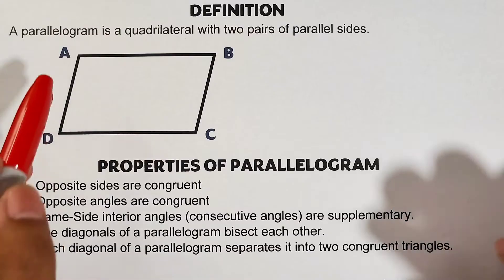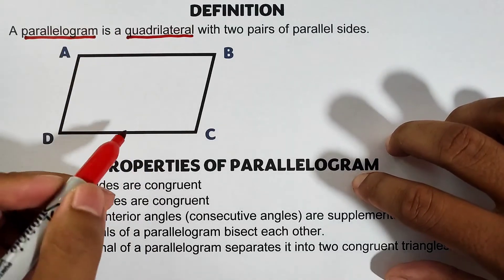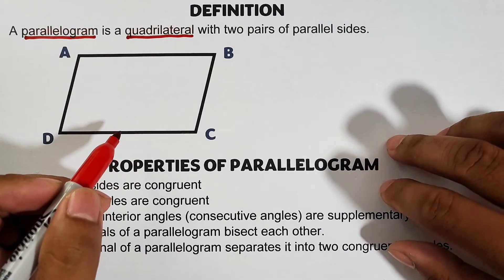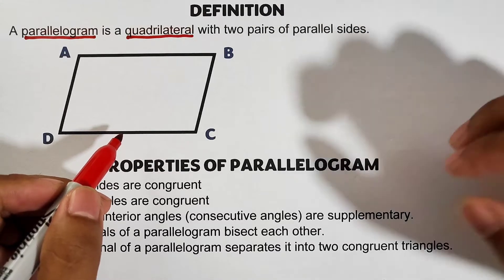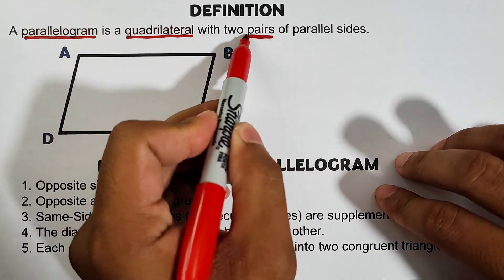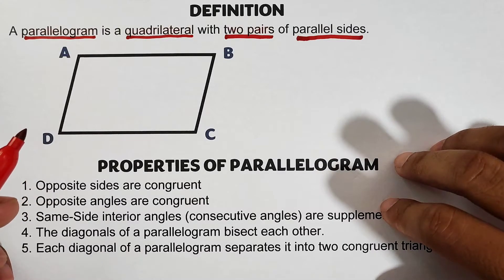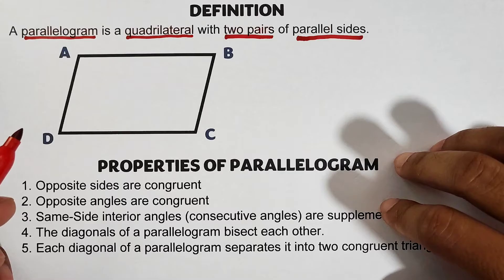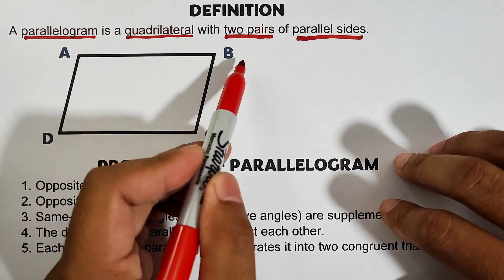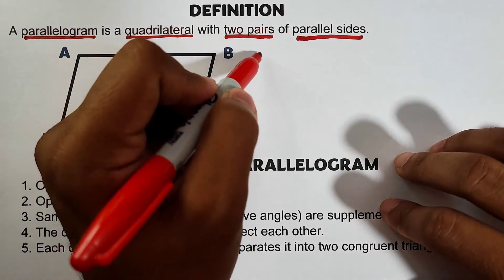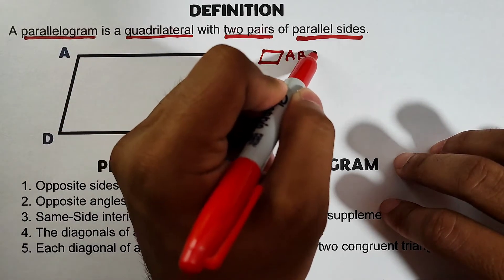A parallelogram is a quadrilateral with two pairs of parallel sides. So we will know that a quadrilateral is called a parallelogram if it has two pairs of parallel sides. Quadrilaterals are defined based on the number of pairs of parallel sides. What we have here is parallelogram ABCD.